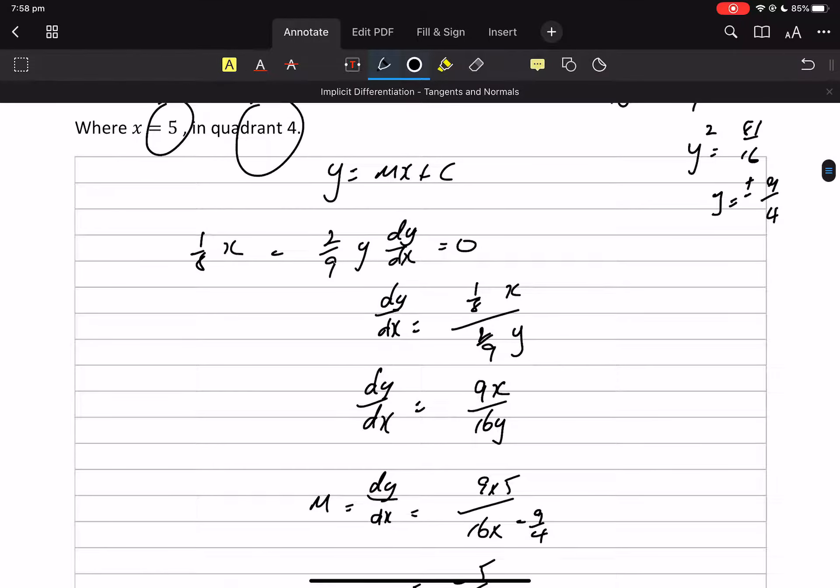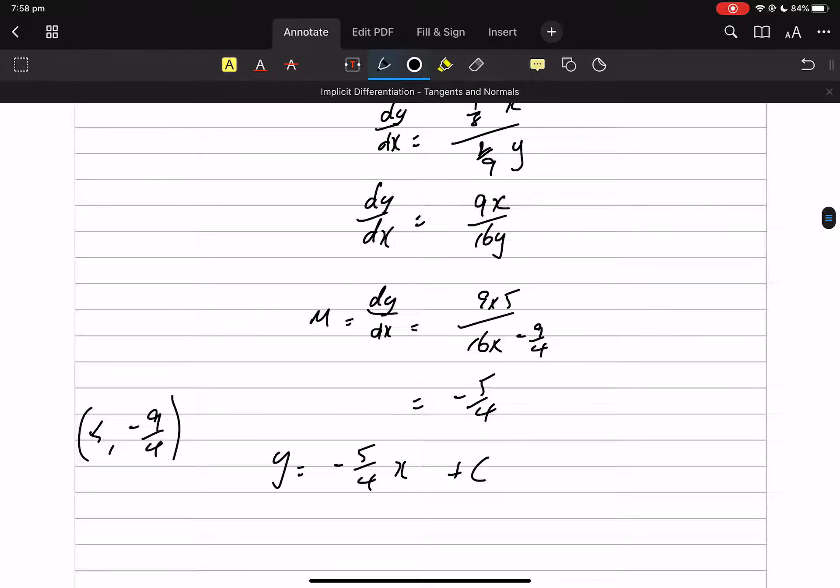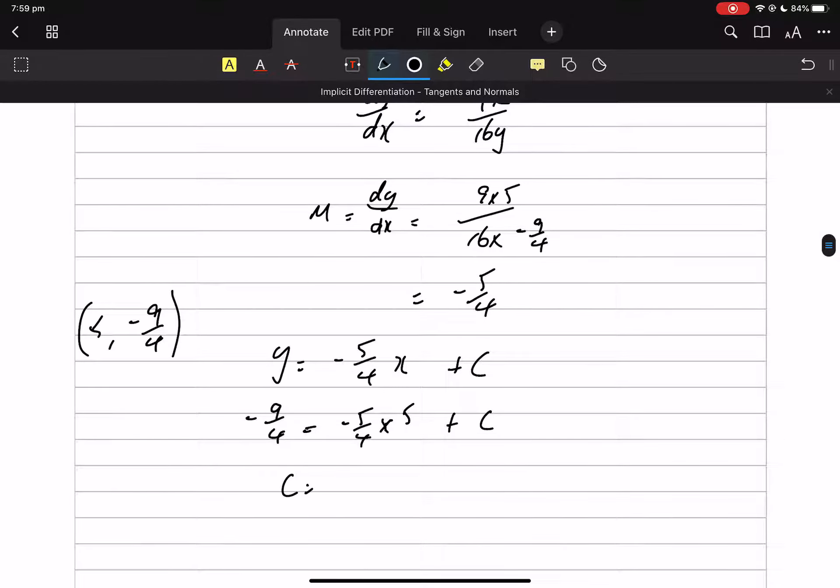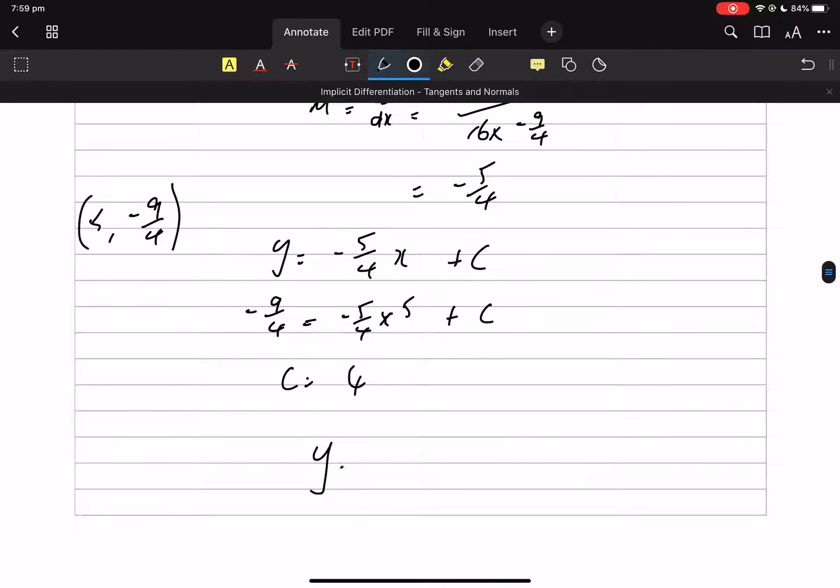And then we have this point, 5 and minus 9 on 4 that goes through the tangent. So it must satisfy the equation because it lies on the line. So c equals minus 9 plus 4. There we go. Plus 4. There's a job for you. Check that that's right.